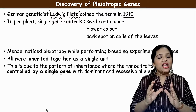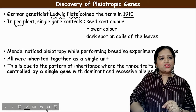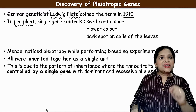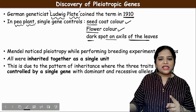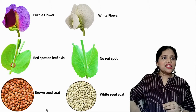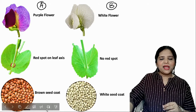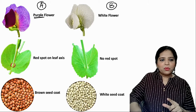When Mendel was doing experiments using the garden pea plant, a single gene controlled three different characters in the organism: coat color, flower color, and a dark spot on the axils of the leaves. Mendel took plant A, which had purple flowers and red spots on the leaf axils, and crossed it with another plant.